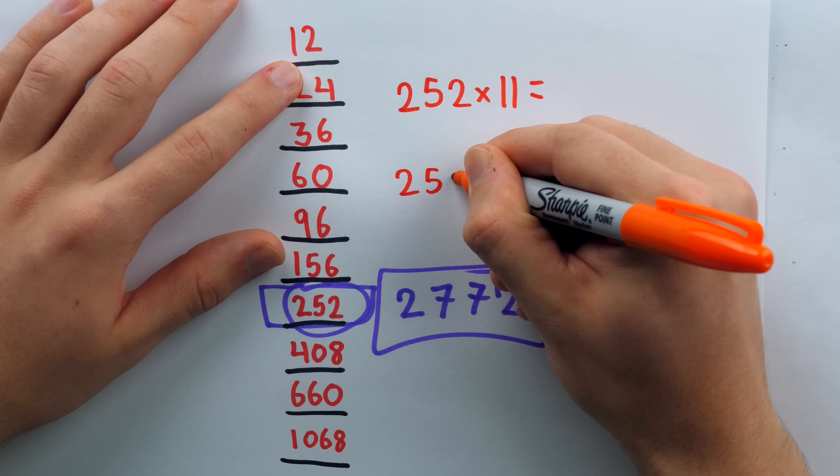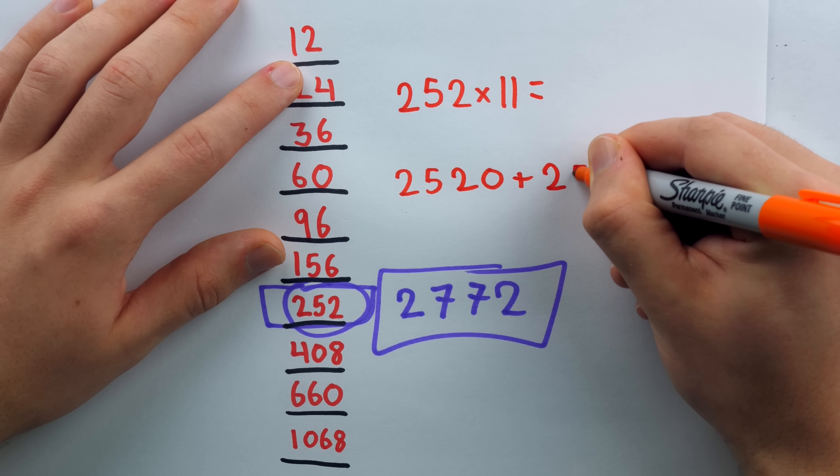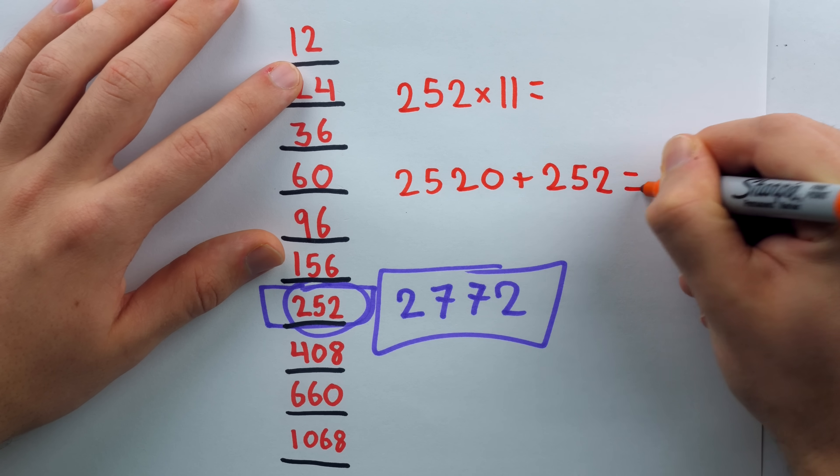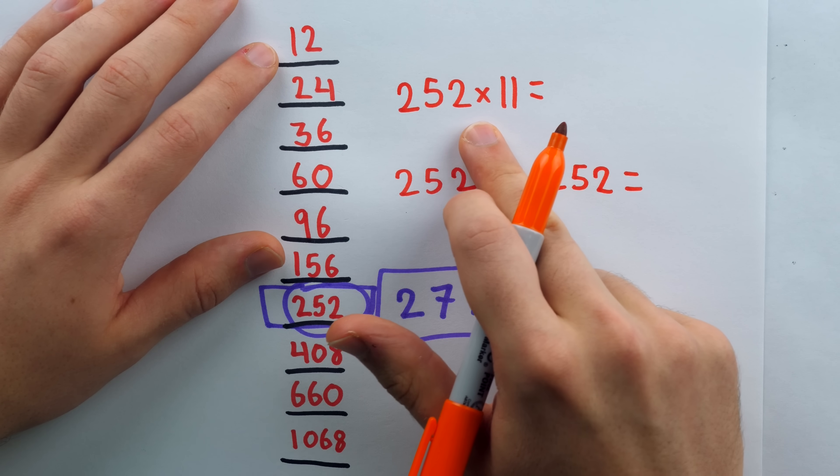So just, okay, it's 2,520. That's the times 10. And then, plus 252. That's the times 1. And that's pretty easy to do. But there's a trick to multiplying by 11 that's much easier.